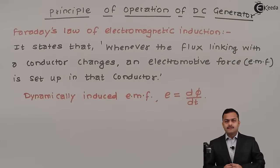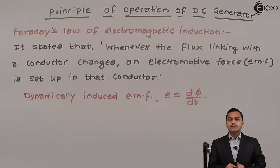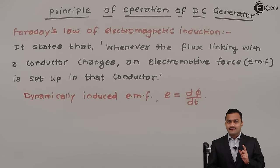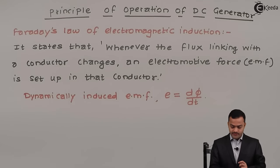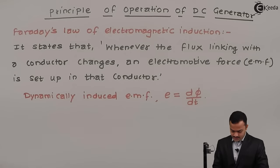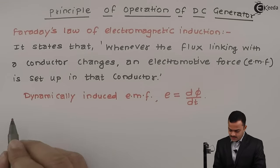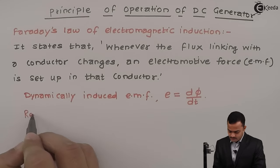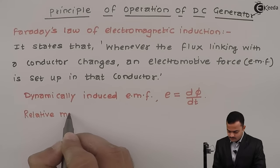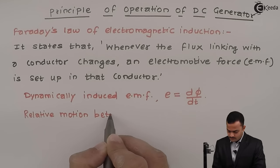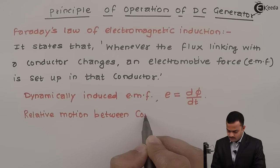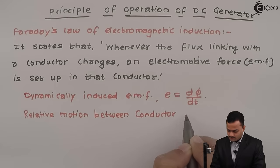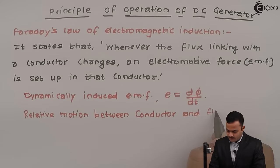Now the question is: when will I get a change in flux? There are two options. I should have a relative motion between a conductor and a flux. This is a very important statement. What is required for a DC generator to induce EMF is relative motion between conductor and flux.